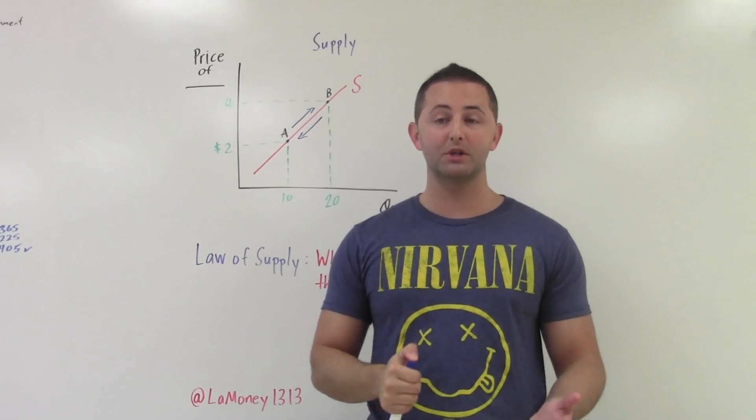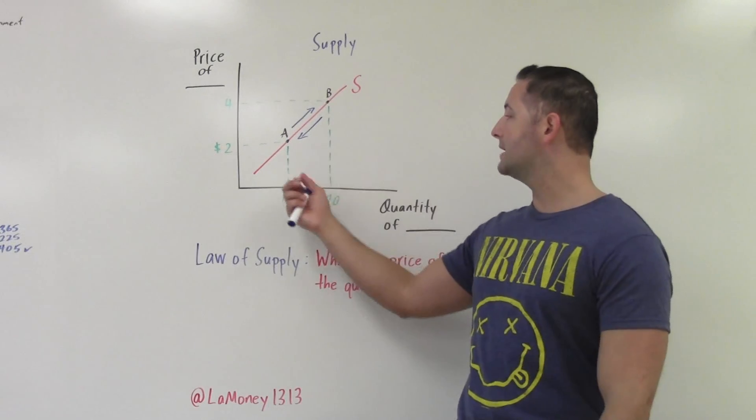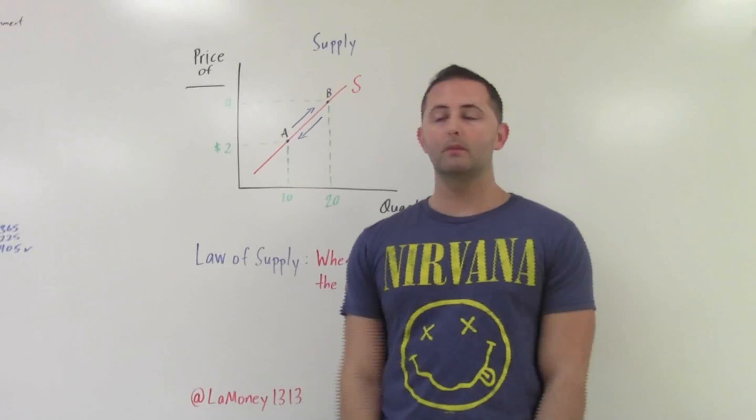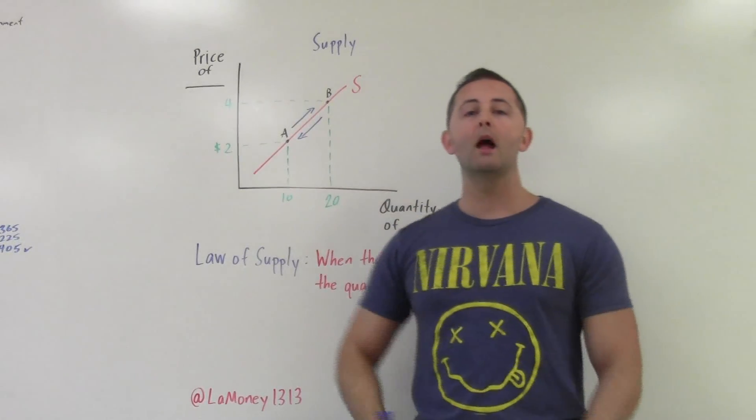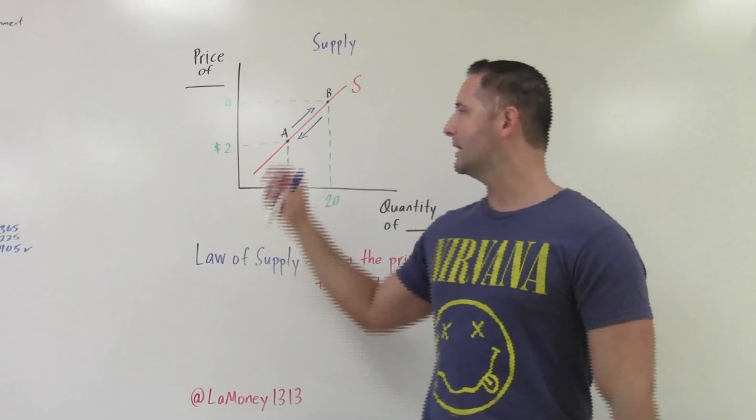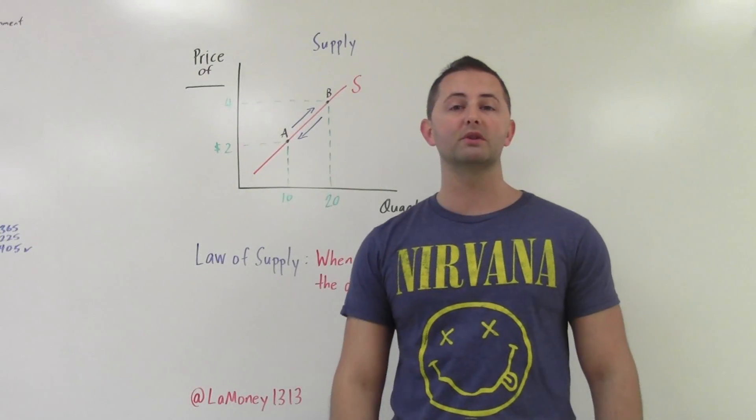So what we're seeing is that there is a direct or positive relationship between price and quantity supplied. And that's pretty much it. Remember when we're talking about movements along the curve or a change in quantity supplied, the only thing that causes that is a change in the price of that good or service.